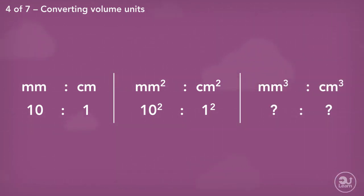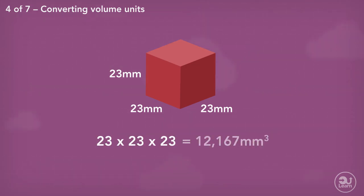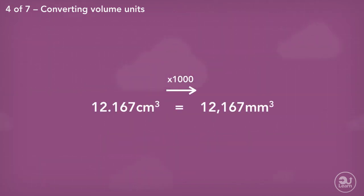Is there a pattern like before? Well, let's see what happens to our values. The volume in millimeters cubed will be equal to 23 times by 23 times by 23, which is equivalent to 12,167 millimeters cubed, which is a thousand times larger than 12.167 centimeters cubed.